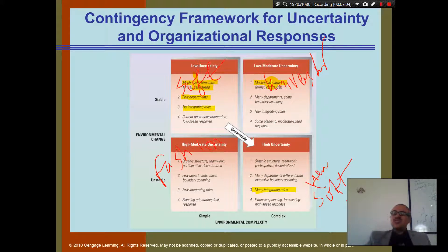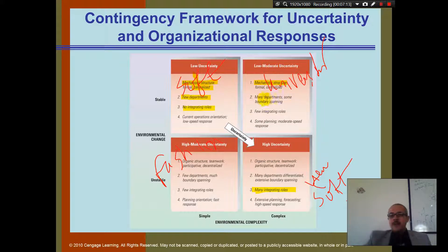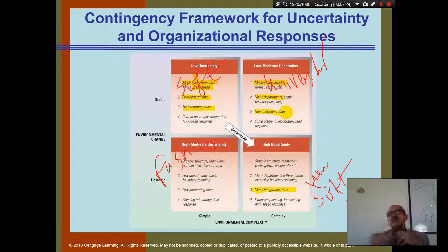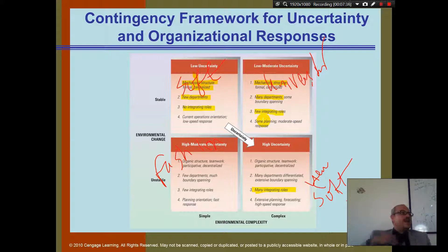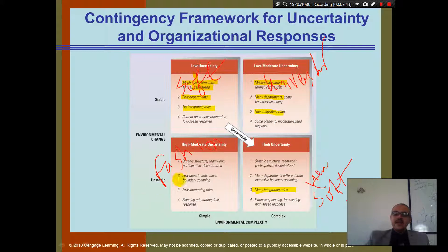In a university, we are a little bit mechanistic in terms of structure. What happens in the school of business, we don't necessarily care about what happens in the pharmacy section. The university has many departments with some boundary spanning and few integrating rules — for example, pharmacy and business might integrate on one shared course like statistics. Our plans in the school of business are completely different from those in the school of pharmacy. This represents low-to-moderate uncertainty.